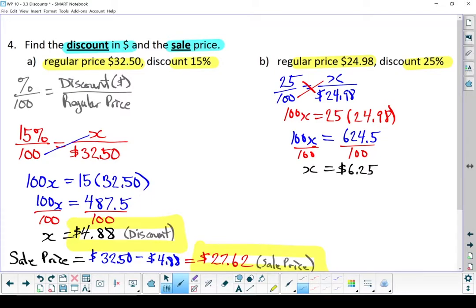To find my sale price, I'm going to subtract that from $24.98. In this case, my sale price is $18.73.